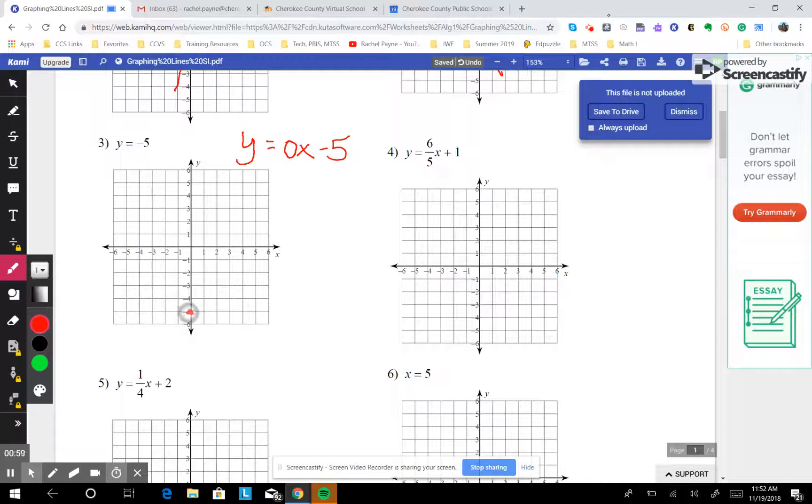So that means begin at negative 5, which is right here, rise 0, run 0. You don't go anywhere. Basically, this means the only thing the line will touch is the y, and it touches the y at negative 5. It never touches the x, because there's no x in the equation.